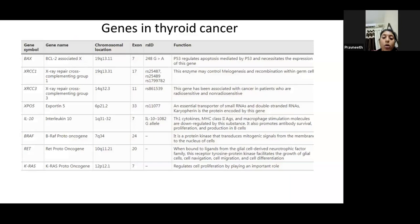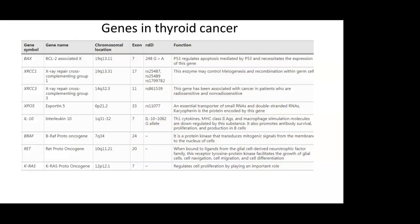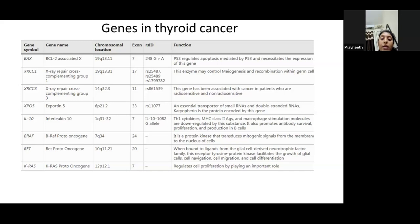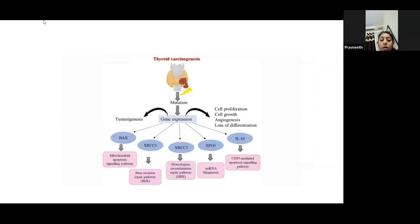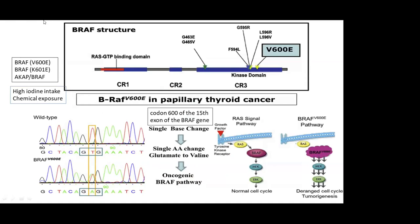The WNT pathway involves beta-catenin, a cell adhesion pathway. Recently identified genes involved in thyroid cancer include BCL2-associated X (BAX), X-ray repair cross-complementing group genes XRCC1, XRCC3, XPO5 (Exportin-5), interleukin-10, BRAF, and RET. BAX is involved in the mitochondrial apoptotic signaling pathway. XRCC genes are involved in the base excision repair pathway — when this repair fails, cells continue to proliferate. XRCC3 is involved in another repair pathway, and XPO5 is a microRNA export gene.